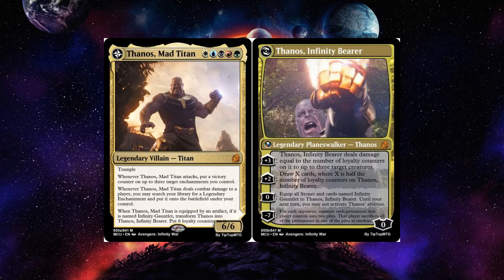When he's equipped with the Infinity Gauntlet, he transforms into Thanos Infinity Bearer, starting with six loyalty counters and four loyalty abilities. I've gotten many requests for planeswalkers in Magic the Marveling. I decided all planeswalkers will be people who wielded the Infinity Gauntlet — so in Endgame, Iron Man and the Hulk will also have planeswalker variants. Thanos Infinity Bearer is a legendary planeswalker Thanos with six loyalty. His plus three deals damage equal to the number of loyalty counters on him to up to three target creatures.